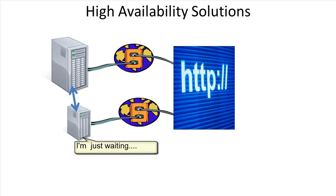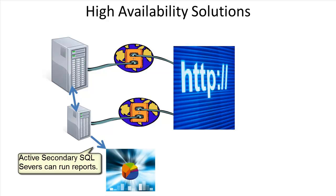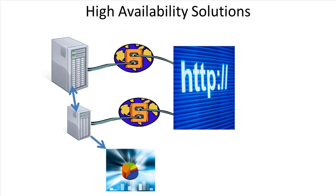Most of the time nothing goes wrong, and the secondary server sits with rich, important, up-to-date data without really doing anything. Since this extra hardware is mostly unused, couldn't you run queries and reports off it? That way you get real-time reports without taxing the production system. Some high availability solutions allow the secondary to be an active secondary so reporting servers can use this real-time data. If your solution uses a passive secondary, you cannot run reports against it.